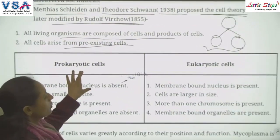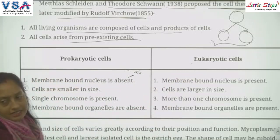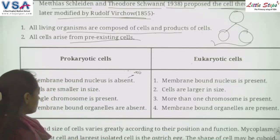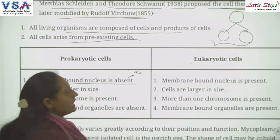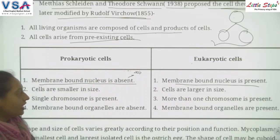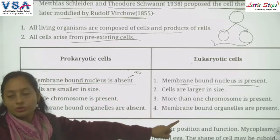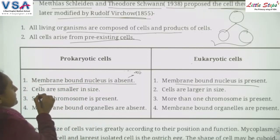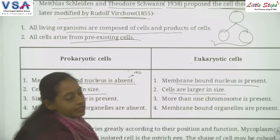Now we study the difference between prokaryotic and eukaryotic cells. In prokaryotic cells, membrane-bound nucleus is absent, whereas in eukaryotic cells, membrane-bound nucleus is present — meaning nuclear membrane is present in eukaryotic but absent in prokaryotic cells. Prokaryotic cells are smaller in size while eukaryotic cells are larger.